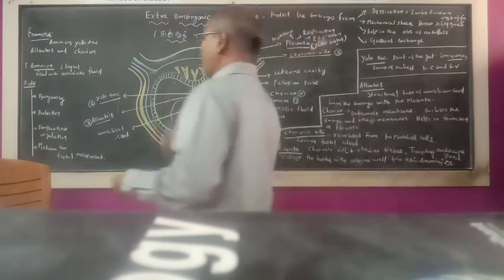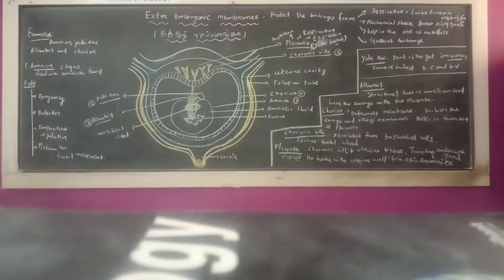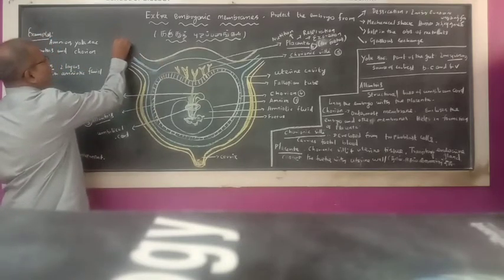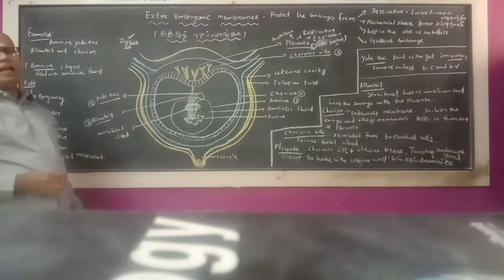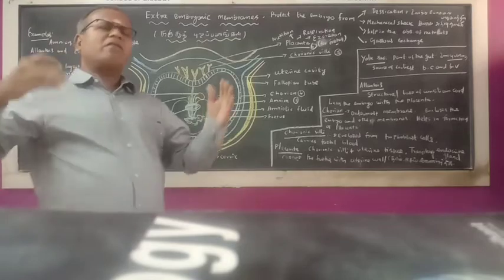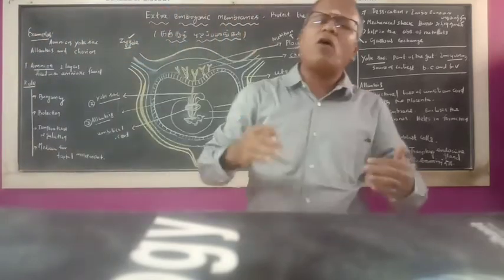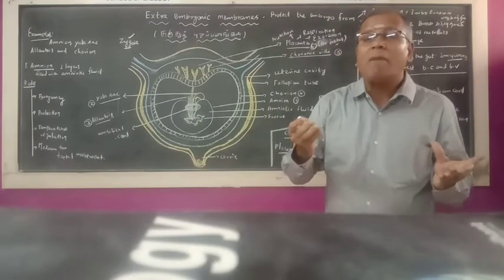Now we will talk about Extra-embryonic Membranes. The embryo is the end product of fertilization. The zygote is unicellular in nature. The newly formed zygote undergoes mitotic subdivision to form a ball-like structure called blastula. The process is said to be cleavage or blastulation.